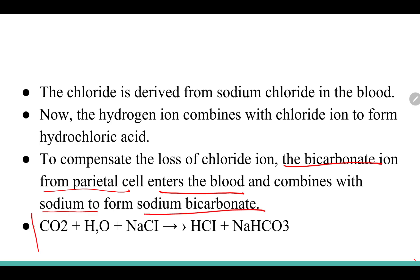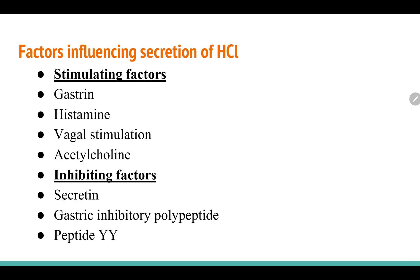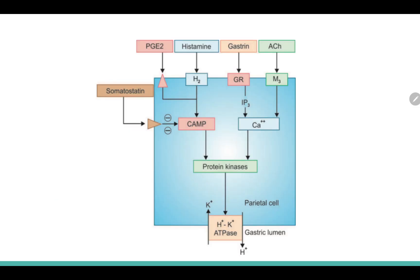The overall equation is: CO2 + H2O + NaCl → HCl + NaHCO3. The factors which stimulate HCl secretion are gastrin, histamine, vagal stimulation, and acetylcholine. The inhibiting factors are secretin, gastric inhibitory polypeptide, and peptide YY.